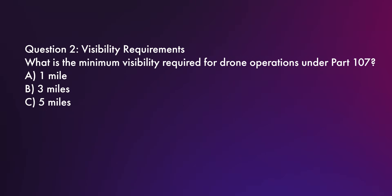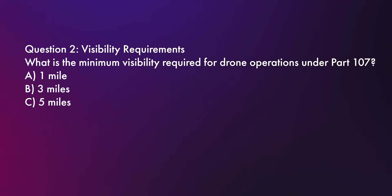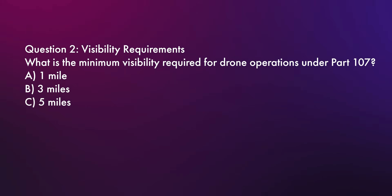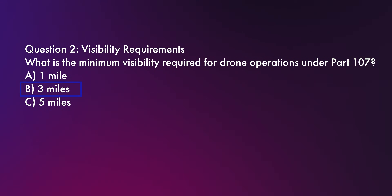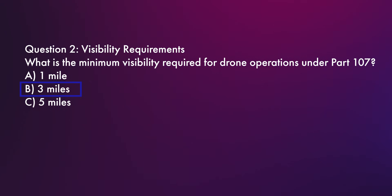Question number two: What is the minimum visibility required for drone operations under Part 107? It's one of the most common questions on the FAA Part 107 exam, so it's really important to know it. The correct answer is B, three miles. The FAA requires at least three miles of visibility to ensure pilots can maintain line-of-sight and avoid hazards like low-flying manned aircraft.